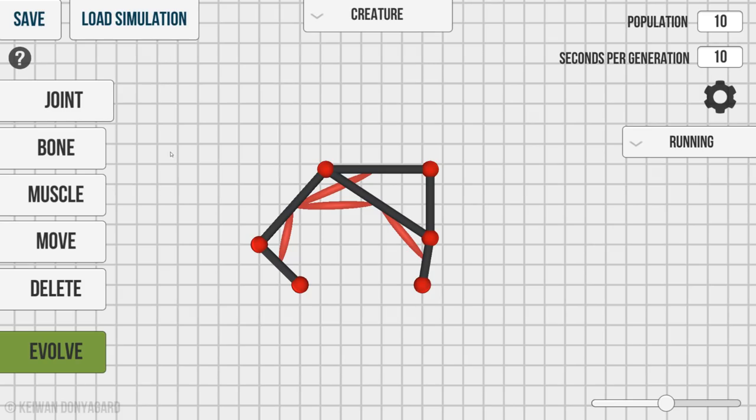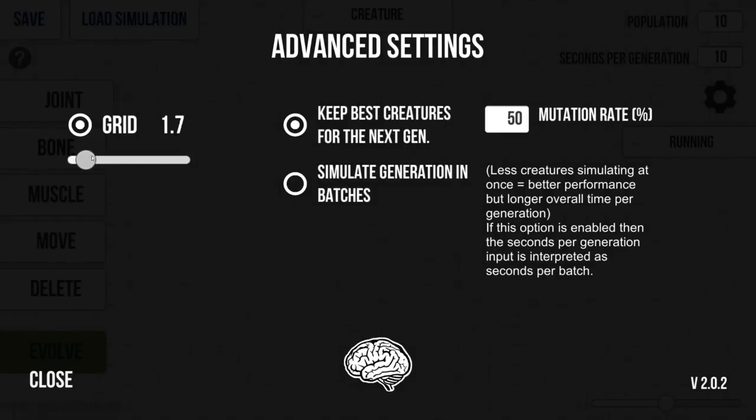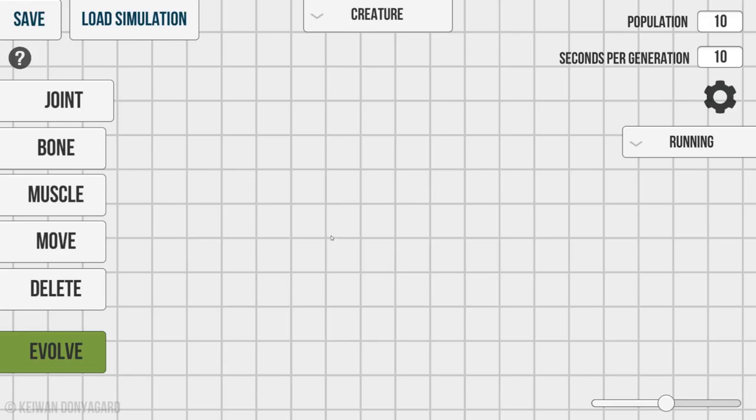This kind of happens in the first couple generations. The muscles are figuring out which way should we work. This is actually starting to get pretty funny how these things are working. It's clear that this is an inferior design.